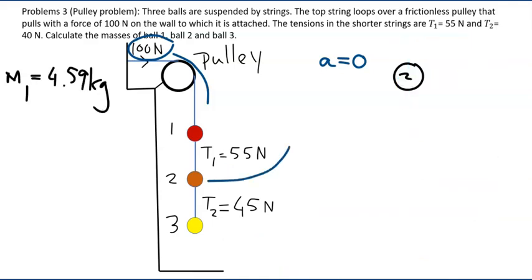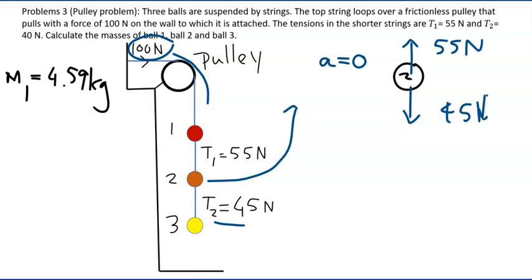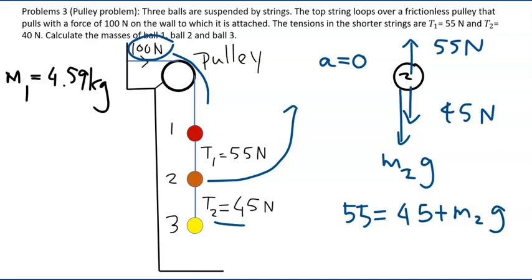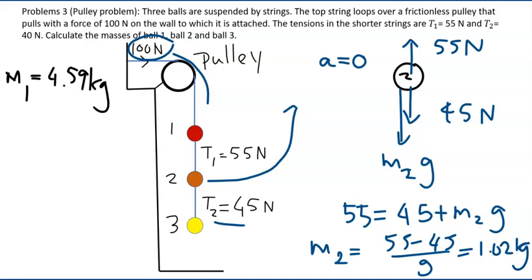For Ball 2: forces acting on it are T1 = 55 N upward, T2 = 45 N downward, and its own weight M2·g downward. Balancing gives 55 = 45 + M2·g, so M2 = (55 − 45) / 9.81 ≈ 1.02 kg.